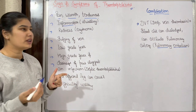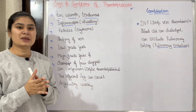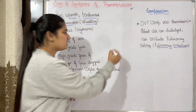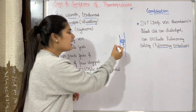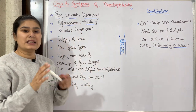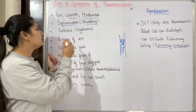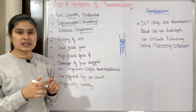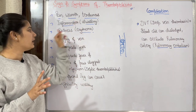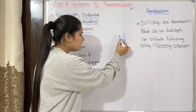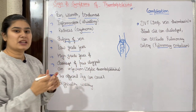Next is inflammation, meaning swelling. Swelling can occur because of obstruction — suppose there is a vein and there is a blockage, so blood flow will be limited and blood will accumulate. This is called venous stasis, which leads to swelling. Redness will also occur. These are the basic signs: pain, warmth, tenderness, swelling, redness, and bulging of a vein due to venous stasis.